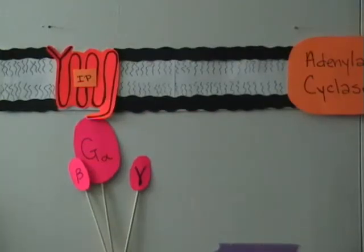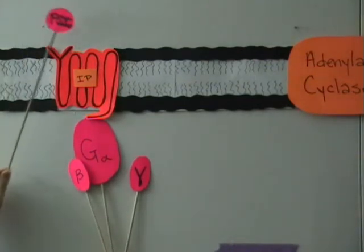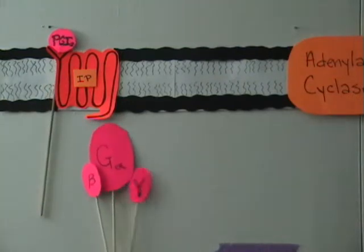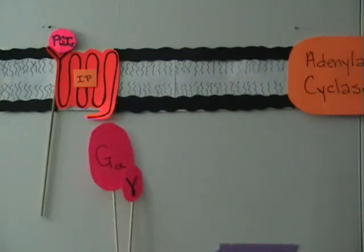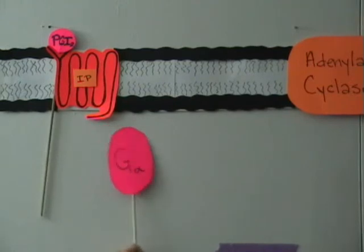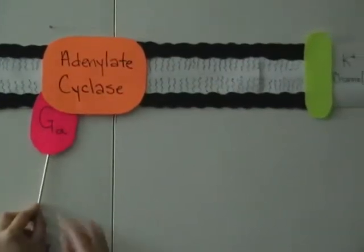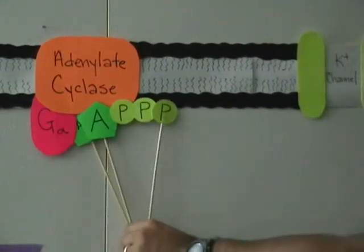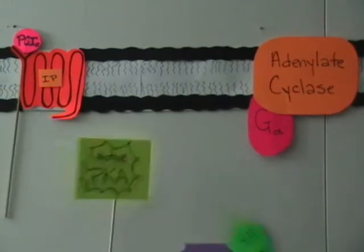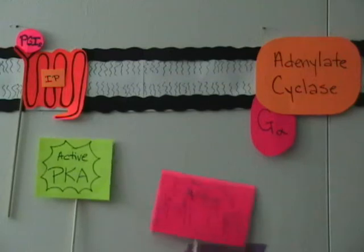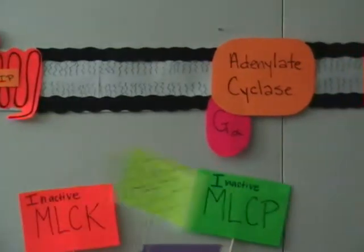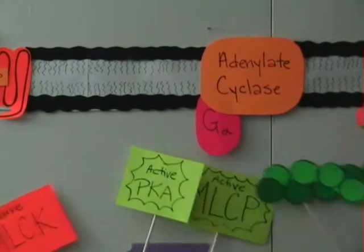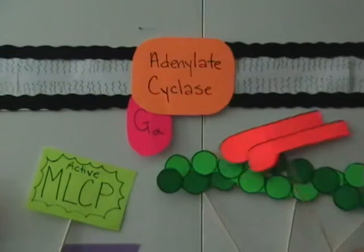The path where arachidonic acid can affect smooth muscle is due to the binding of PGI-2 with the IP receptor. When this class of prostaglandin binds onto the IP receptor, the trimeric Gs protein is then activated. Once activated, the beta and gamma subunit dissociates. The active G-alpha-S protein can then activate adenylyl cyclase, which then produces cyclic AMP using ATP. The cyclic AMP can then activate protein kinase A, PKA.